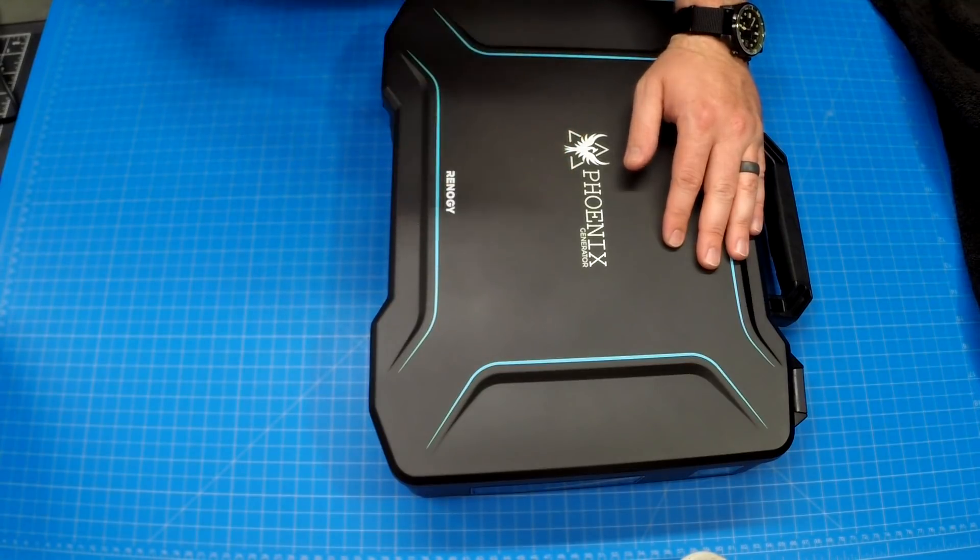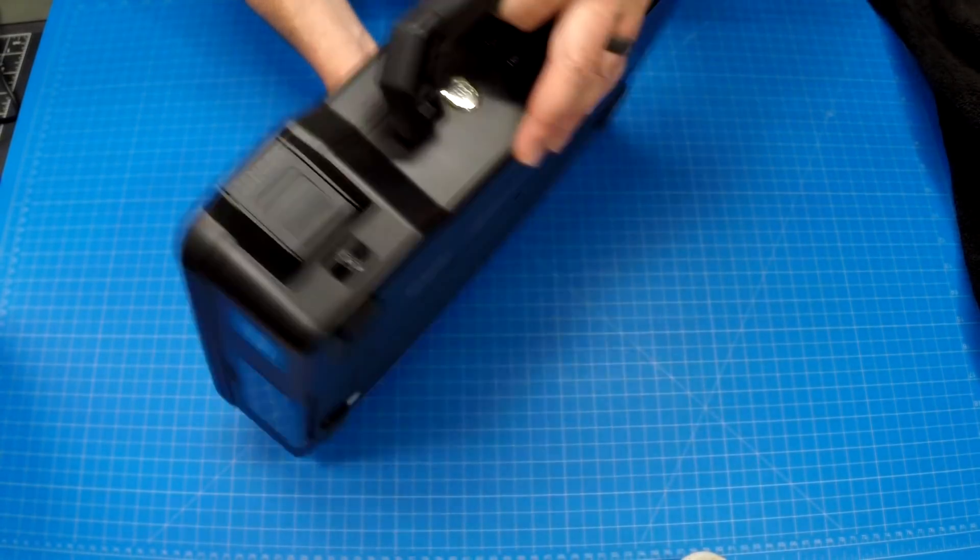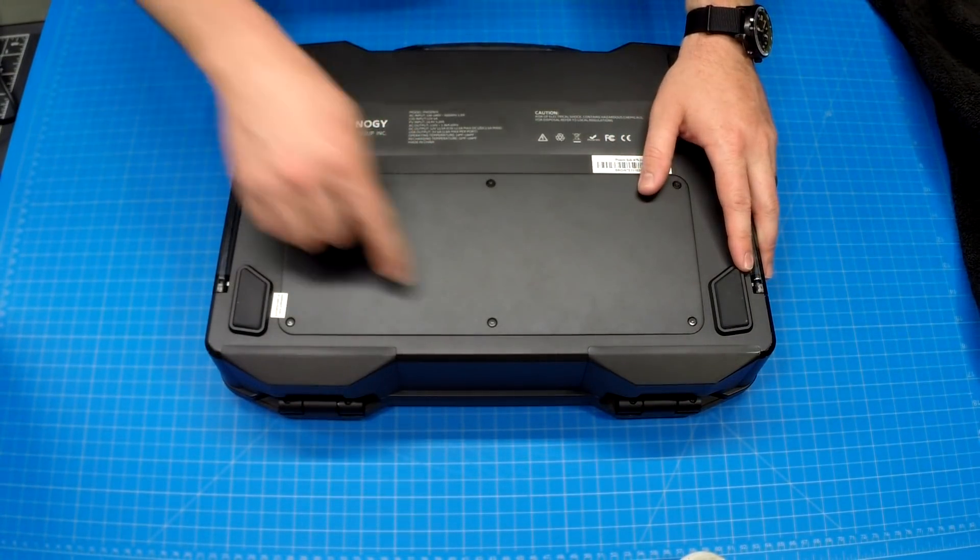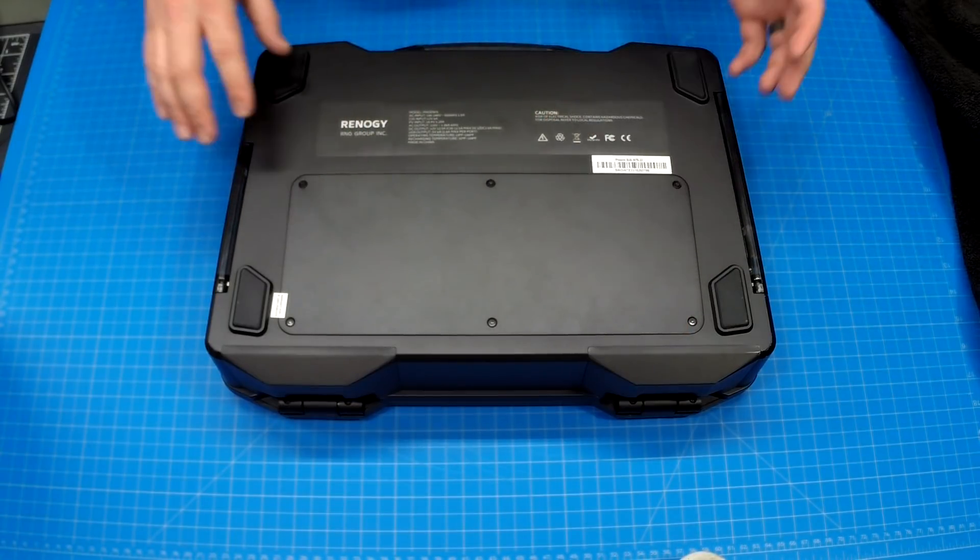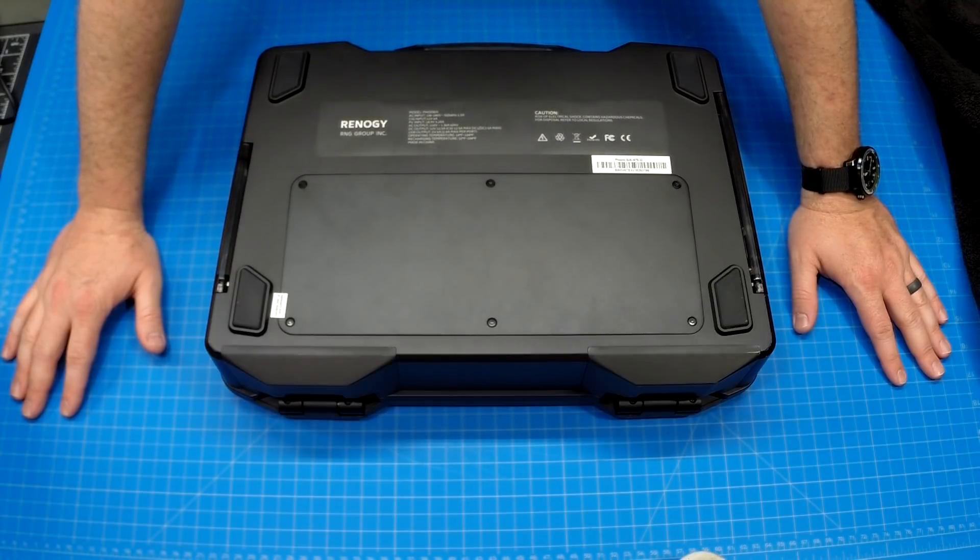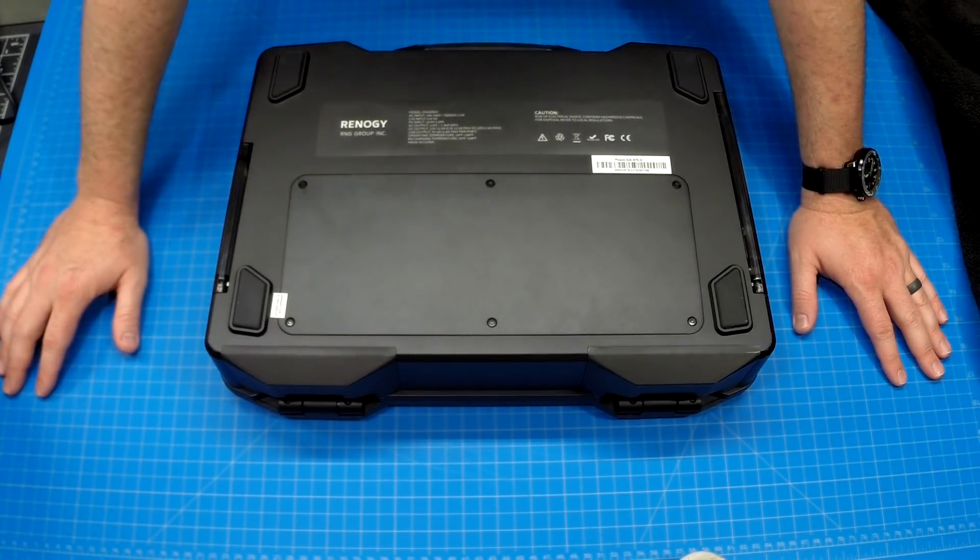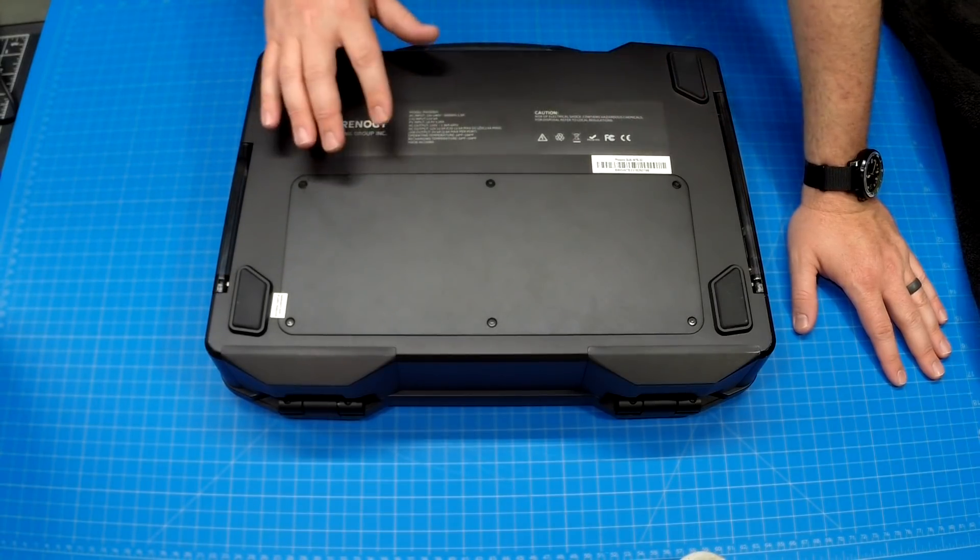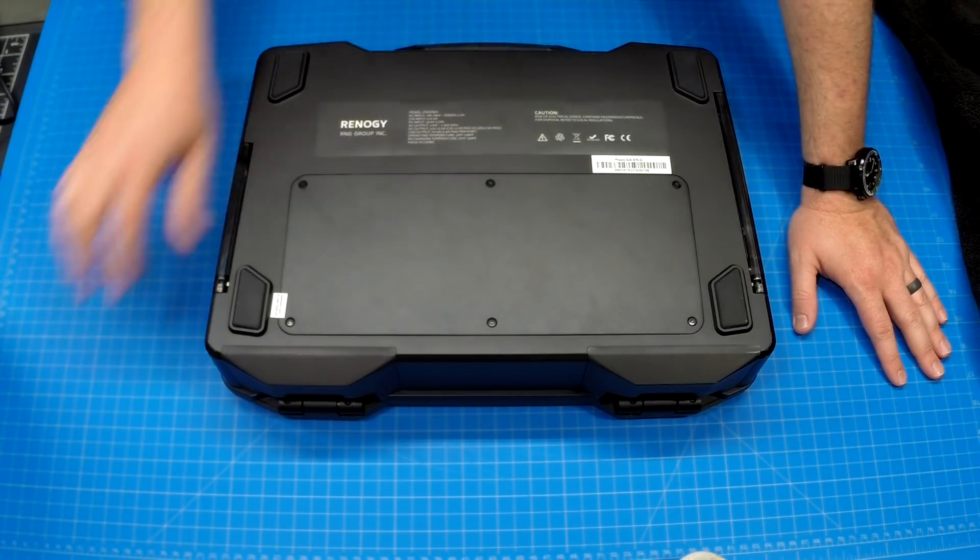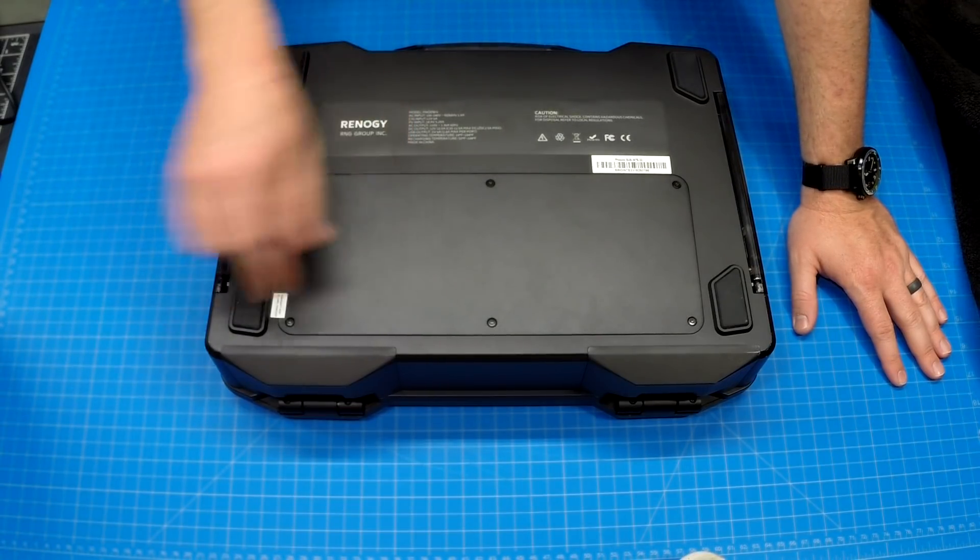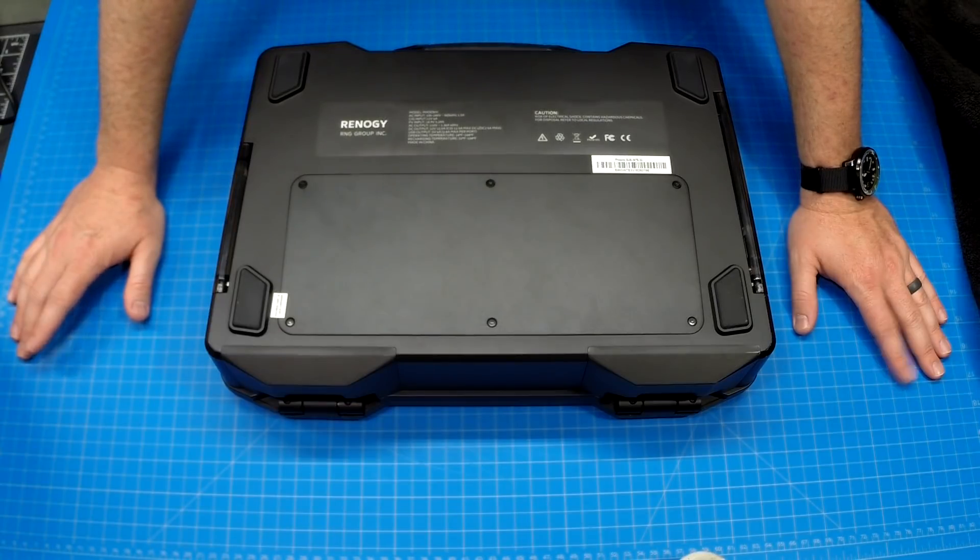The other thing, the battery that comes in here is replaceable, so six screws, that's your battery compartment. Why would you want to replace the battery? Why don't you just buy a new unit? Well, this thing's pretty expensive and the battery that's in here is pretty impressive. The most impressive thing about the Phoenix I'm going to tell you right now is the inverter.